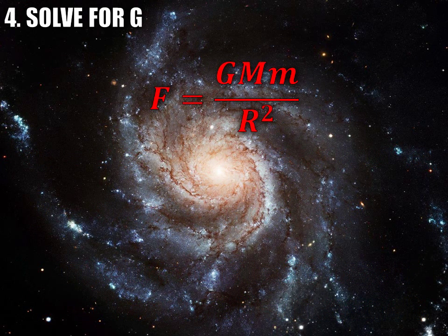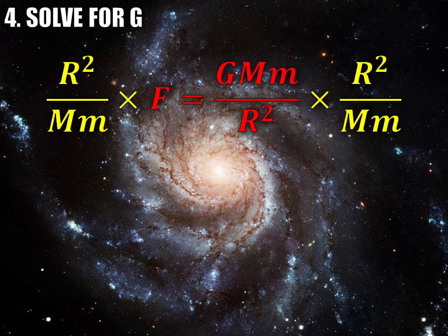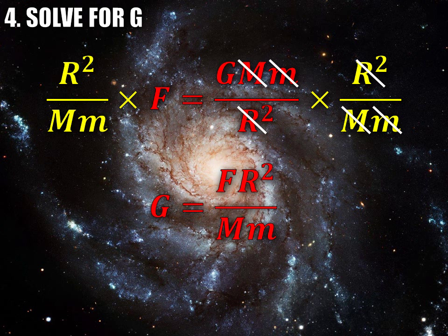We'll go back to the universal gravitation equation, but this time instead of solving for M, we'll solve for G. We want to create an experiment that will measure the gravitational constant. Multiplying both sides by r squared over Mm, the m's cancel and the r squared cancels, leaving us with G is equal to Fr squared over Mm. So we need to measure those quantities on the right-hand side, and if we can measure them, then we'll know what G is.